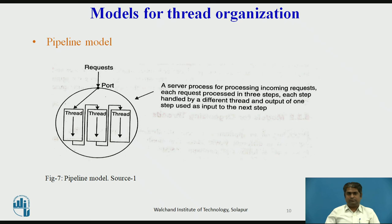The third is the Pipeline model. This model is useful for applications based on the producer-consumer model, in which the output data generated by one part of the application is used as input for another part. In this model, the threads of a process are organized as a pipeline so that the output data generated by the first thread is used for processing by the second thread, the output of the second thread is used by the third thread, and so on. The output of the last thread in the pipeline is the final output of the process, as shown in the diagram.